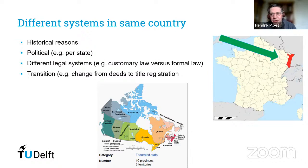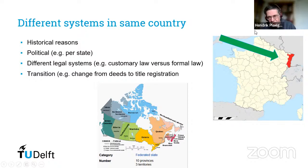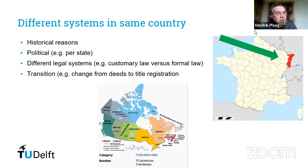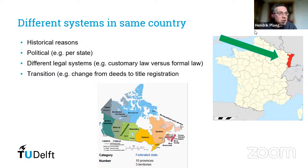Please be aware that within one country you can have different systems next to each other. One reason is a transition: we are moving from registration of deeds or even unregistered lands toward title registration. Not all parcels are transferred at the same time, so that transition can take 50 years, maybe 100 years, before the whole country moves to the new system.